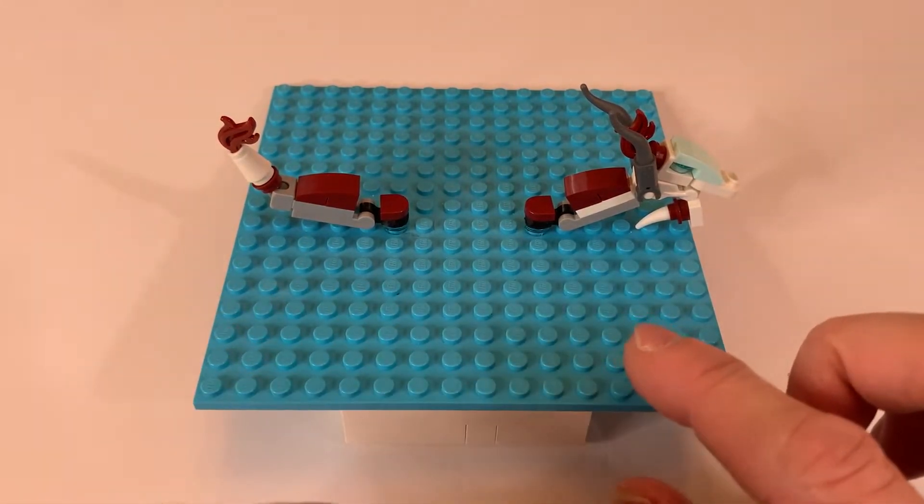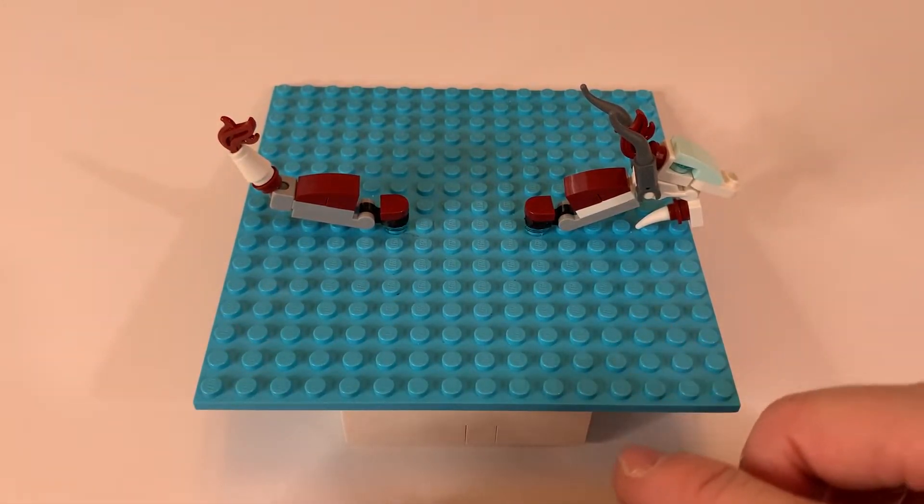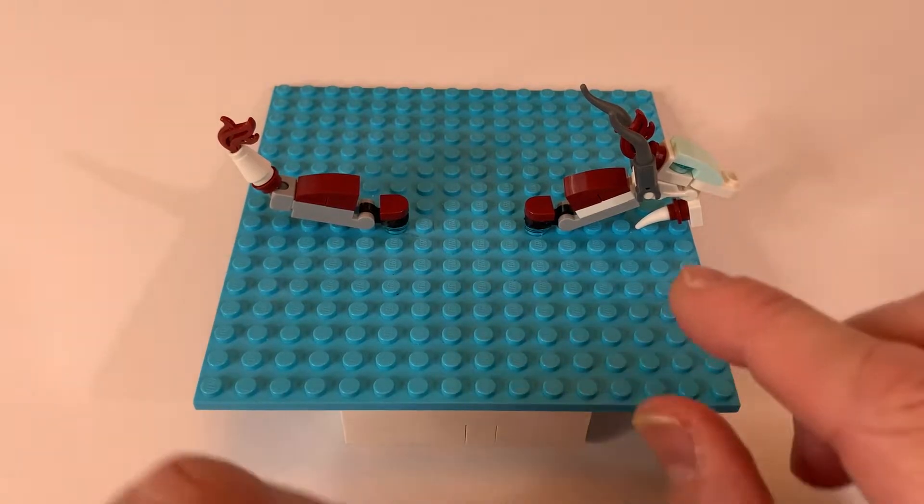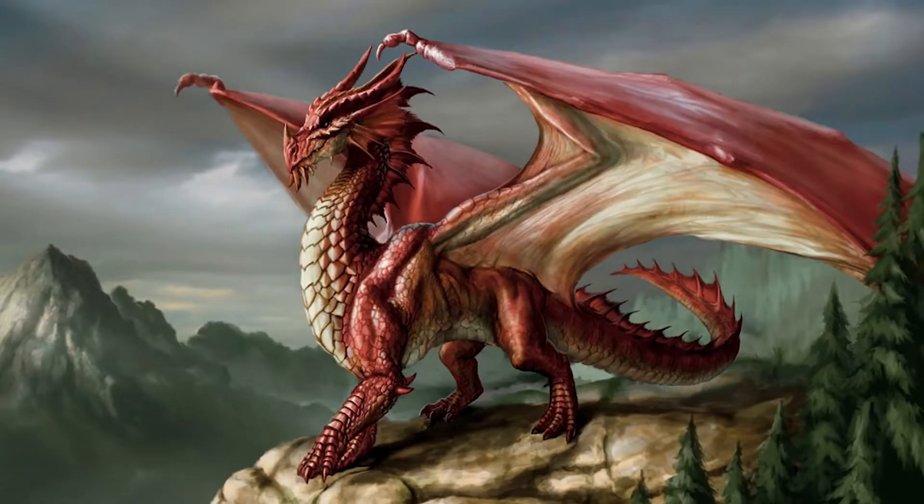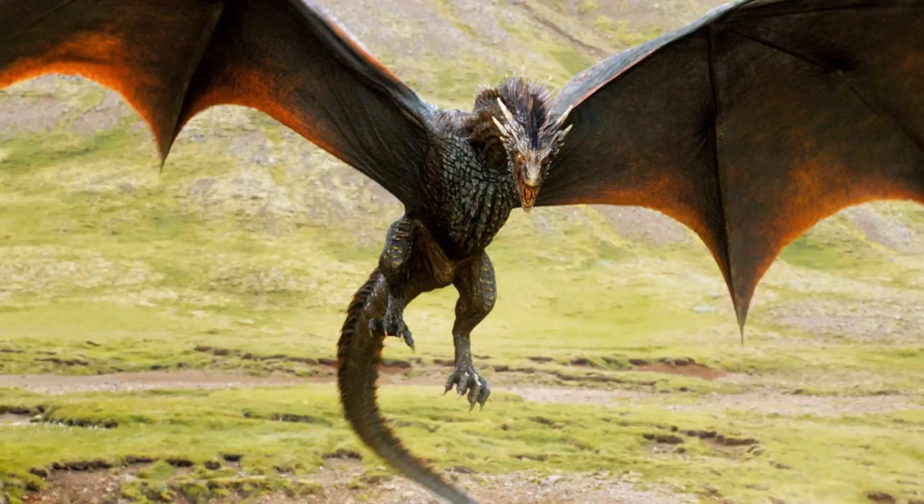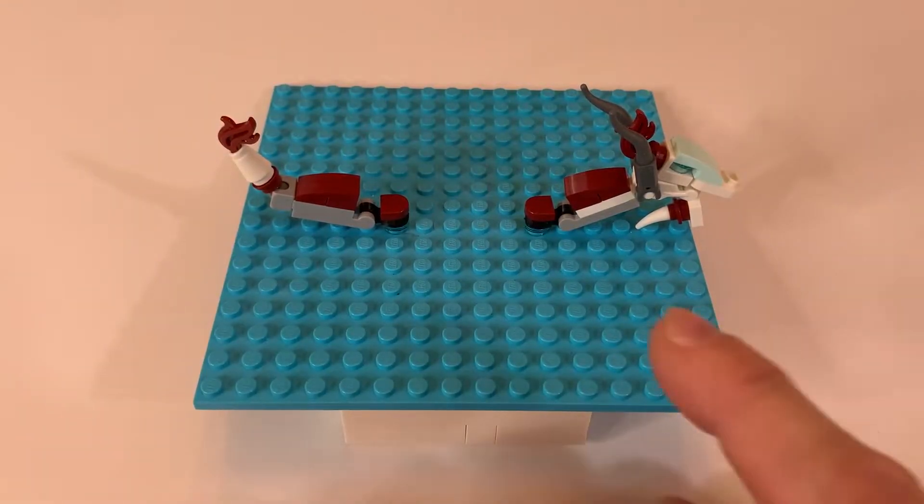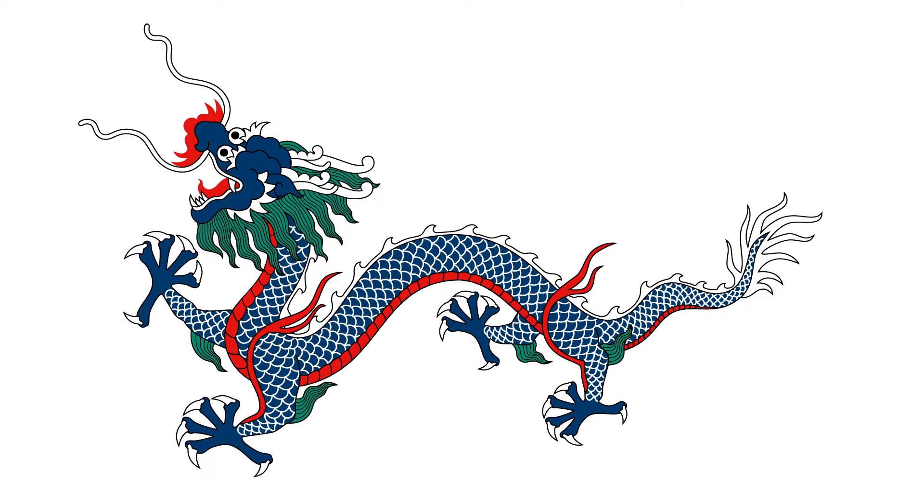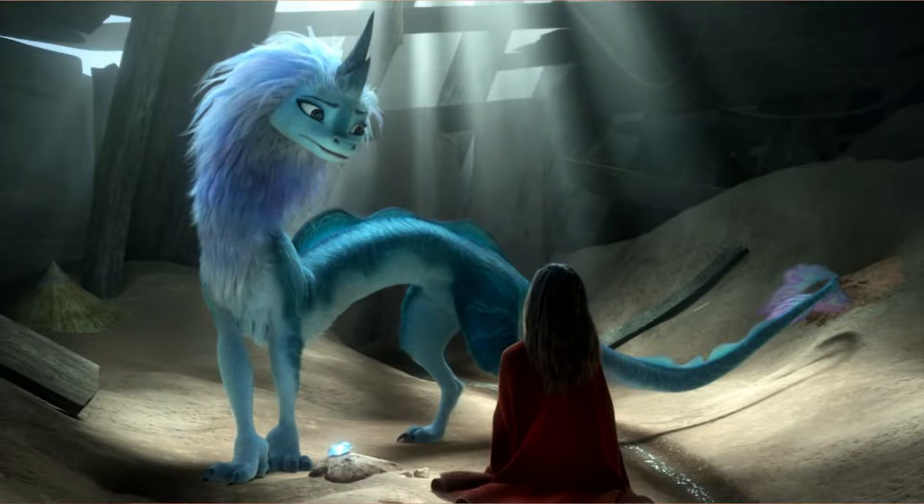A lot of the dragons that we commonly think of actually come out of Europe in the medieval times. They have a larger body. They're the sort you see in the Ninjago sets or in Game of Thrones. But Asian dragons are more like sea serpents. They're longer, more snake-like, kind of a snake-like dragon.